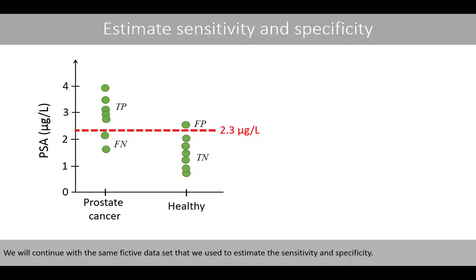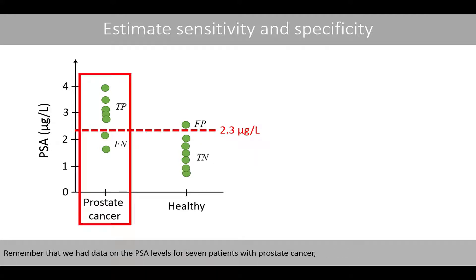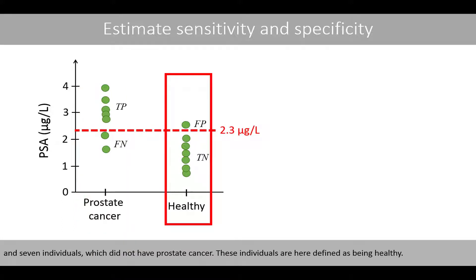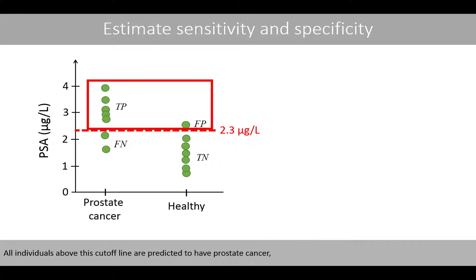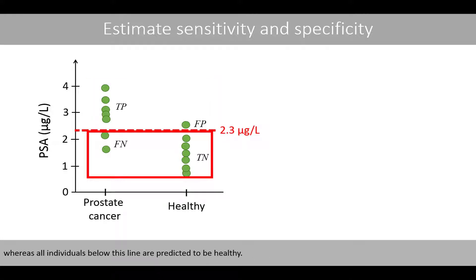We'll continue with the same fictive dataset that we used to estimate the sensitivity and specificity. We have data on PSA levels for 7 patients with prostate cancer and 7 individuals who did not have prostate cancer, here defined as healthy. A cut-off value of 2.3 micrograms per liter was used, where individuals above this cut-off are predicted to have prostate cancer and those below are predicted to be healthy.